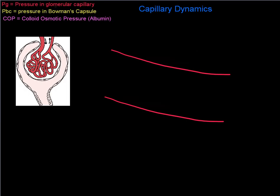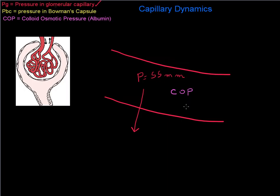In the glomerular capillary we have a pressure that's pushing fluid out, and that pressure is the hydrostatic pressure inside the glomerular capillary — about 55 millimeters of mercury. That is the blood pressure inside the capillary. We also have another pressure operating in the capillary, and that is the colloid osmotic pressure, which is due to the presence of albumin inside the capillary.